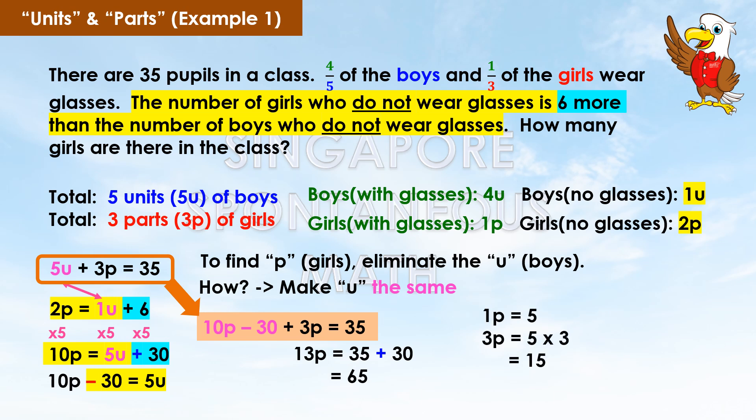Therefore, 1p equals 5, and 3p equals 5 times 3, which is 15. There are 15 girls in the class.